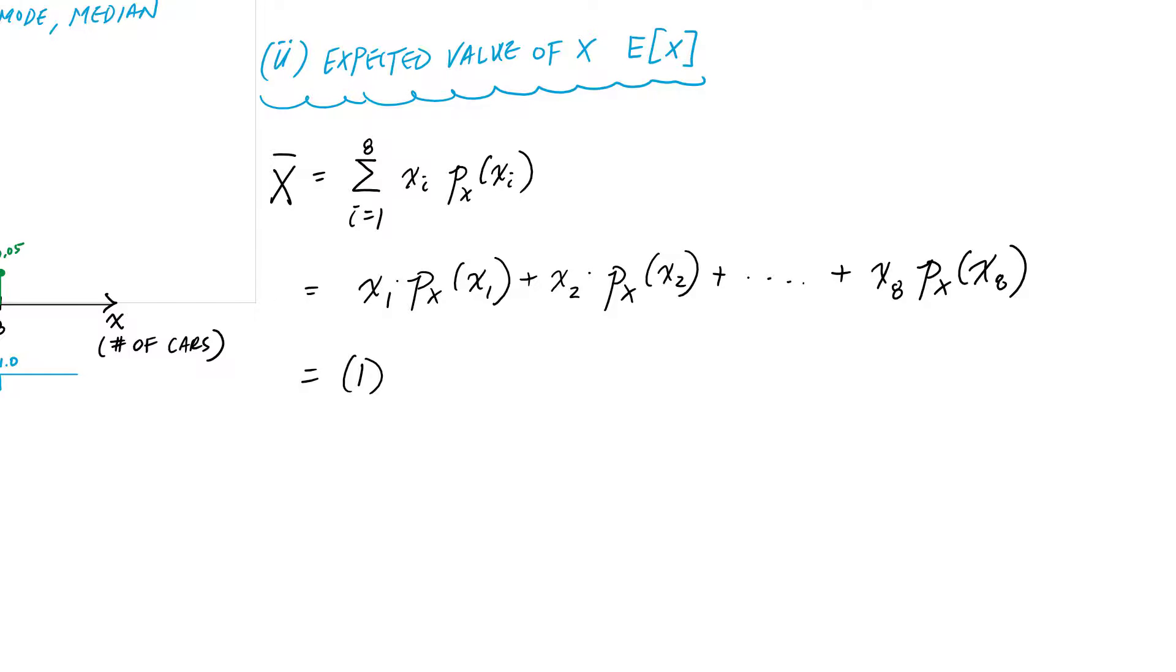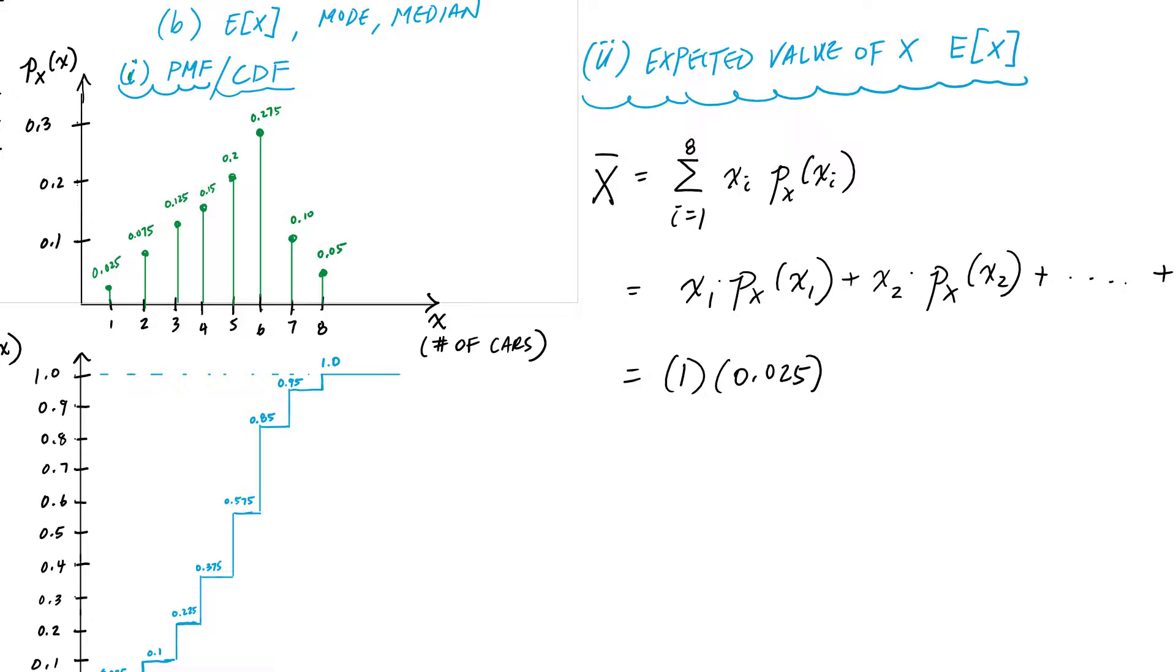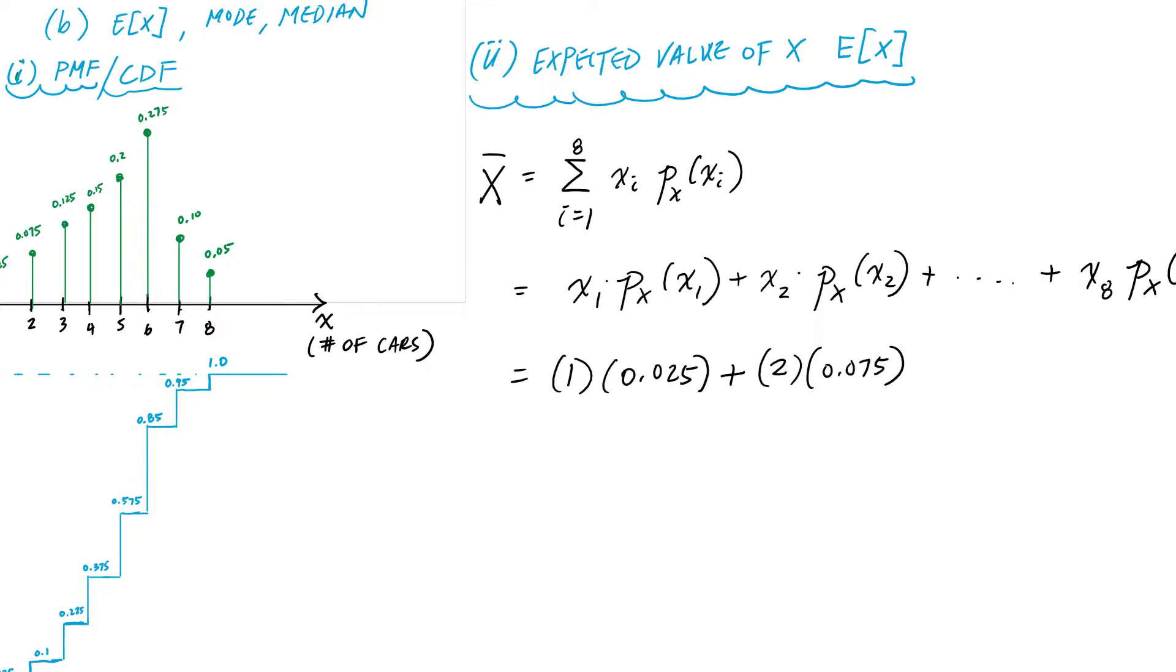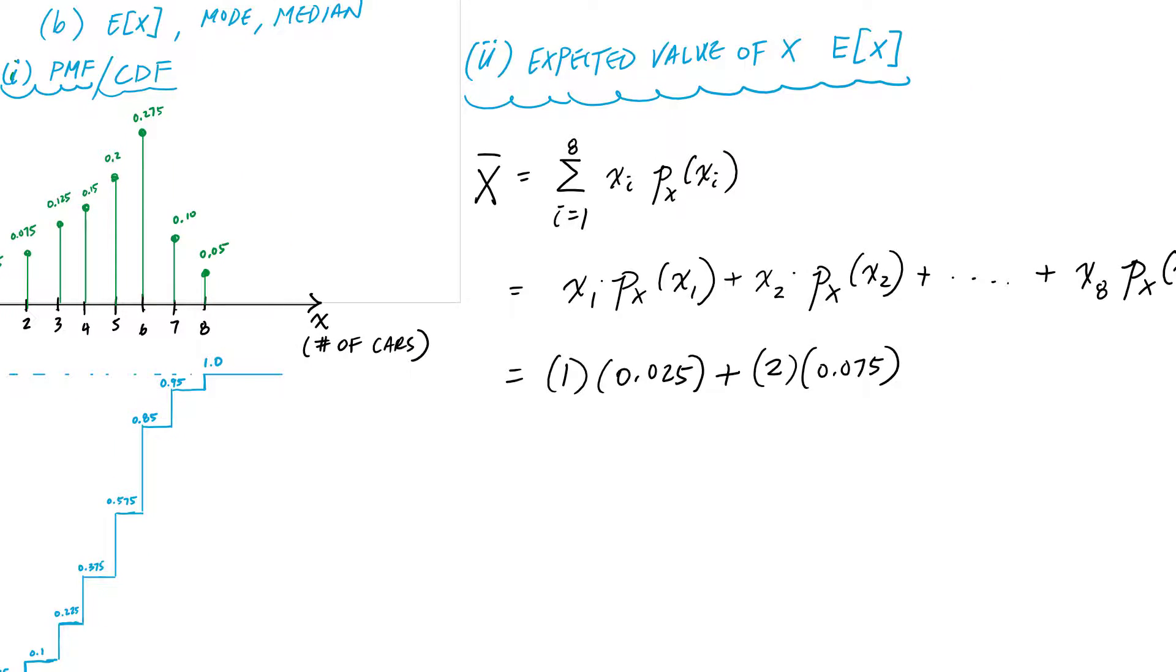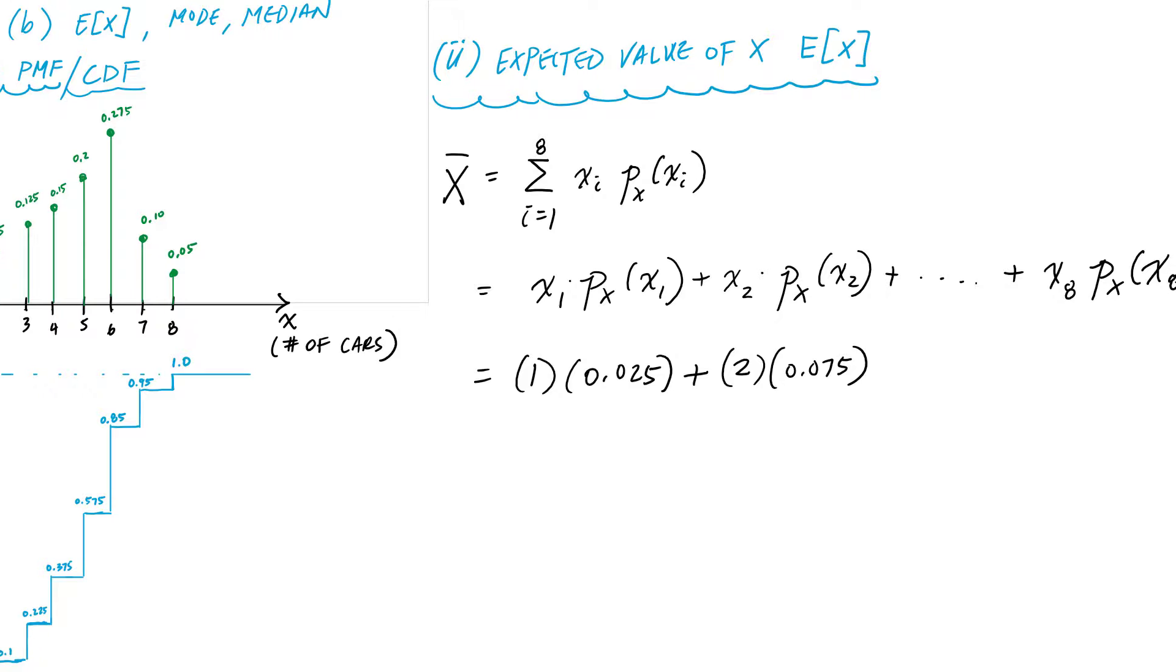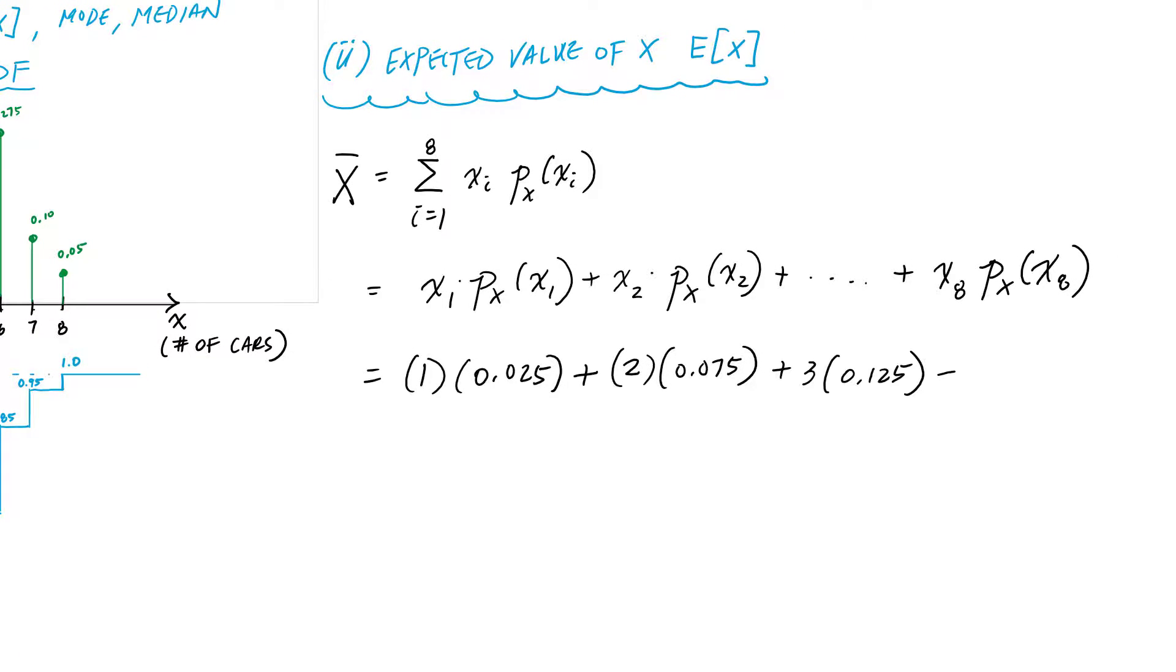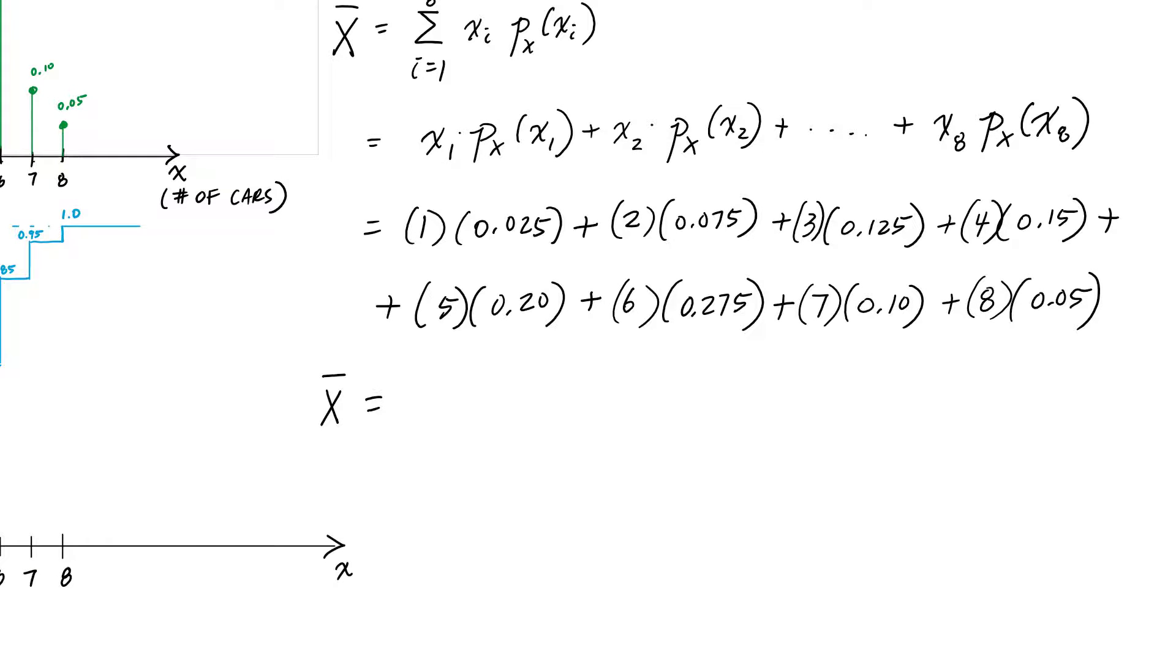You can see right now what we're doing - I have 1 times 0.025, and then I'm just going to keep going. I can use the probability mass function or the table that's given to me to do all this. My mean or expected value here is 4.9 cars.